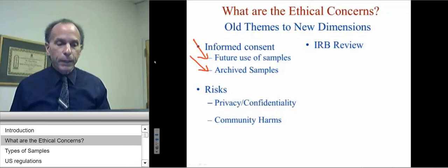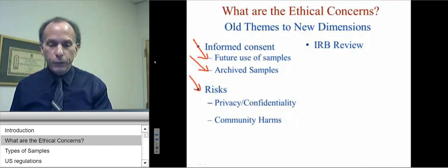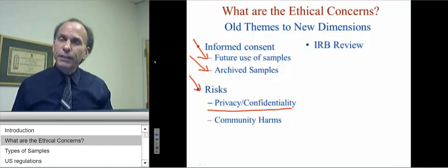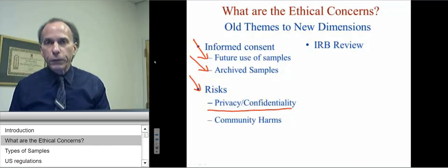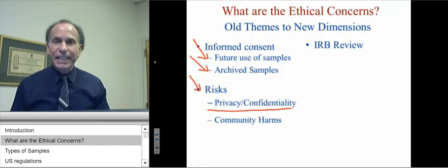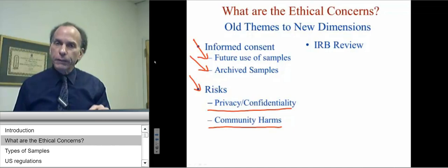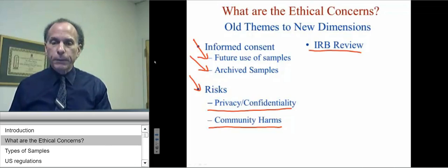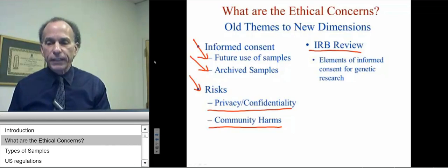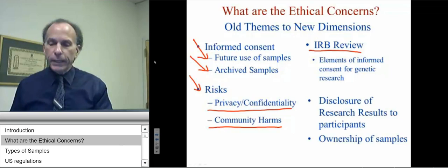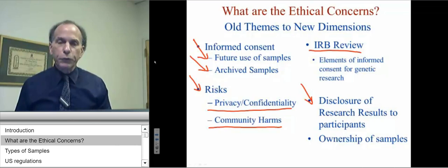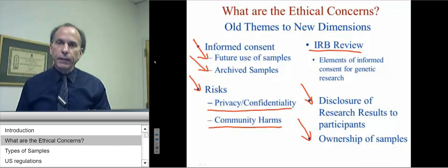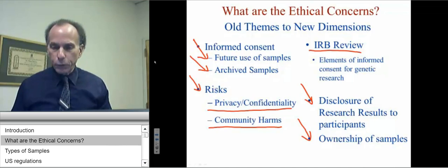We need to address whether informed consent could be waived for archived or existing samples. The risk of genetic research does involve privacy and confidentiality issues. But even if samples are de-identified, we still need to deal with the issue of community harms. Regarding IRB review, we need to consider what additional elements of informed consent are needed for genetic research, whether and how to disclose research results to participants, and who actually owns these samples — because this has implications for commercial prospects.